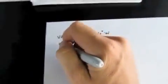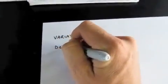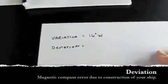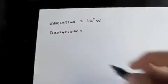The next piece of information you need is deviation. Deviation is the difference in magnetic north and what your compass reads due to ship construction.